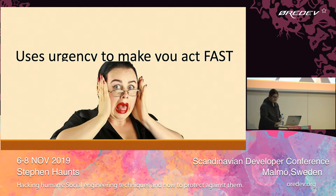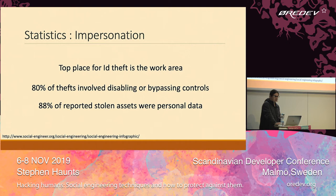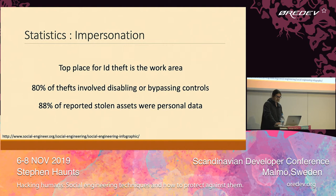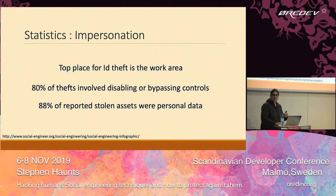Another type is impersonation. The top place for identity theft is actually in the workplace. Attackers might target staff directly, or look for information you throw away. If you have a design document and you bin an old version when you get a new one, that out-of-date document is incredibly valuable to someone outside the organisation — they can get details about systems you're building, design requirements, even bug reports. 80% of thefts involve disabling or bypassing controls, and one of the most valuable things to steal is personal data.